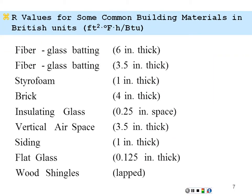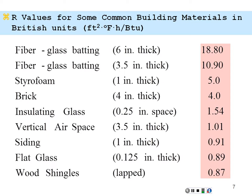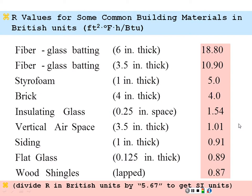Here are some R values for some common materials. Fiberglass batting, 18.8. This is in the British units. 6 inches thick for that one. 3.5 inches thick, 10.9. Styrofoam, 5. Brick, 4. Insulating glass 1.5. You get the idea. But you would divide each of these R values in the British system by 5.67 to get the corresponding value of R in the SI system.